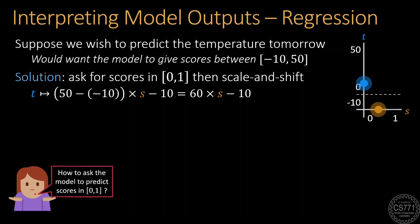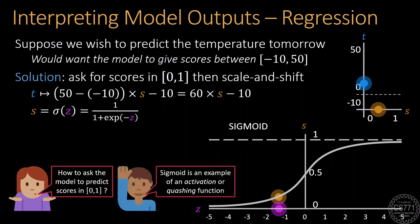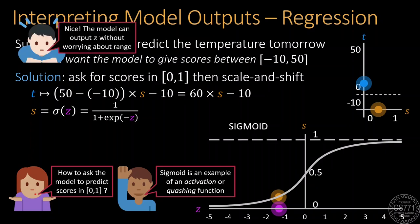Now, you might be wondering, how do we ask a machine learning model to give scores between 0 and 1? Well, the answer to that is this nice function called the sigmoid function, which can take scores that are real valued, that have no restrictions whatsoever, and convert them to scores between 0 and 1. Such functions are often called activation or quashing functions. And it's important to note that no matter what input we give to the sigmoid function, no matter how large or how small, positive or negative, the output will always be a fractional number between 0 and 1. Note that the use of a sigmoid function also allows the model to be completely free in what output it gives, because whichever output it gives will get converted to between 0 and 1 and which can then get scaled and shifted to lie between minus 10 and 50.